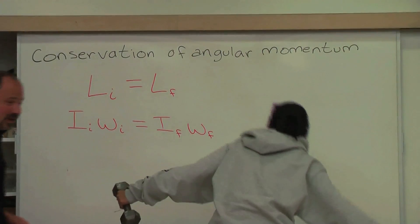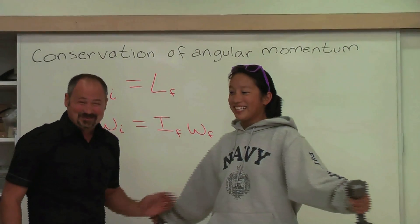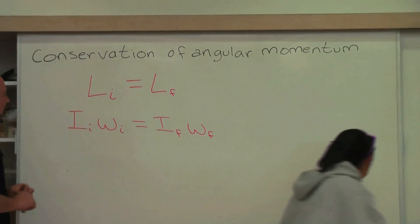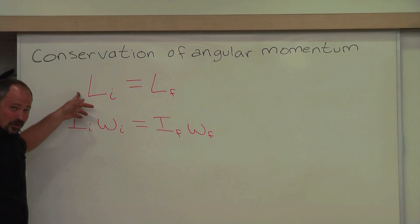It's all about conservation of angular momentum. So, angular momentum gets the symbol L, and it's equal to the moment of inertia multiplied by the angular velocity.